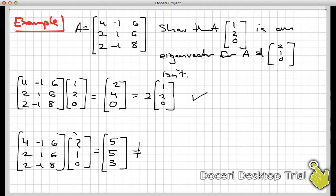And that is not equal to any scalar times (2,1,0), okay? That vector didn't just get stretched, it got bent around in three space somehow or another. So this vector (1,2,0) is an eigenvector, but (2,1,0) is not.